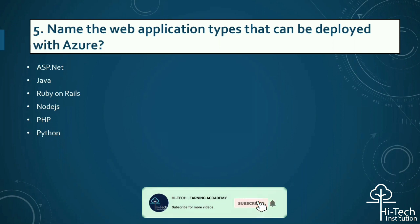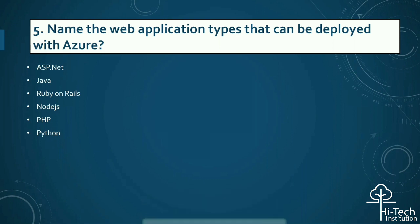The next question is: name the web application types that can be deployed with Azure. Azure web apps support multiple programming languages and frameworks. Some of the widely used languages are ASP.NET, Java, ASP.NET Core, Ruby on Rails, Node.js, PHP, and Python.